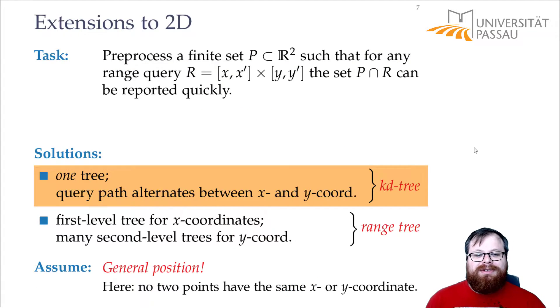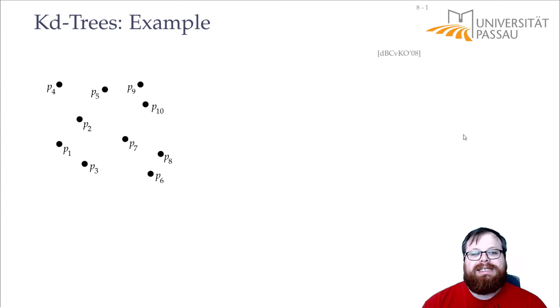Let's start with the KD trees, the trees where the query path alternates between x and y coordinates. Let's look at one example. We have these 10 points here in two dimensions, and now we want to construct the KD tree on this.